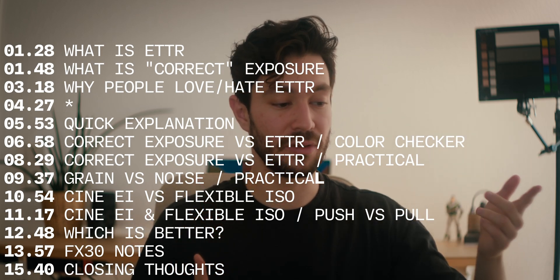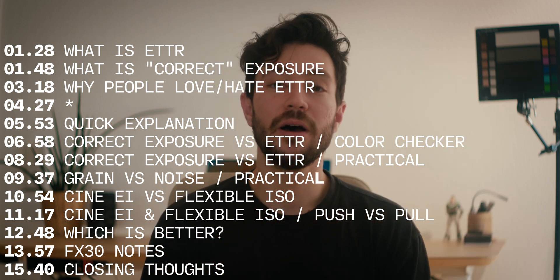Overexposing and then bringing it down in post to get cleaner shadows and less noise is not a bad thing — it just has its place. As DPs, our job is to make something look cool and good, but ETTR is just a technique. It doesn't break the image or make it better; it's just a technique to get less noise, especially for compressed formats like YouTube, Instagram, or social media in general.